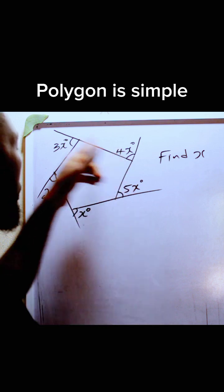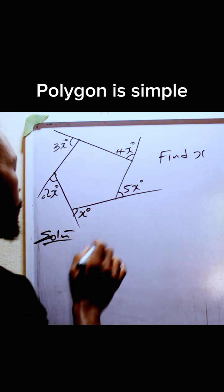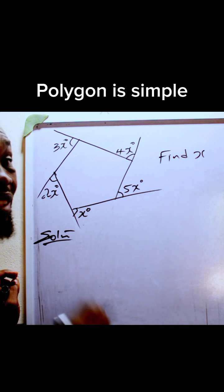x is given in the exterior angles. Class, we already know that the sum of the exterior angle of any polygon is 360.